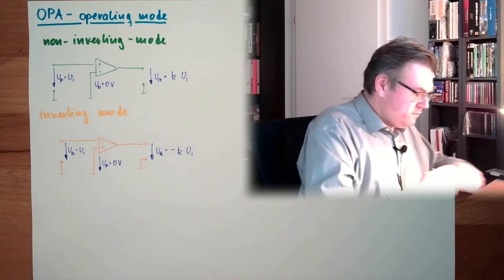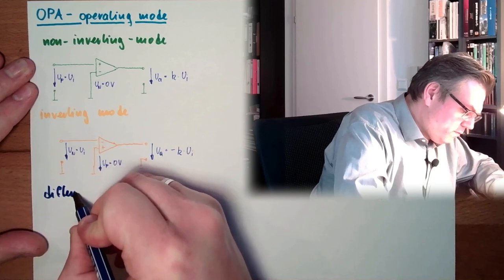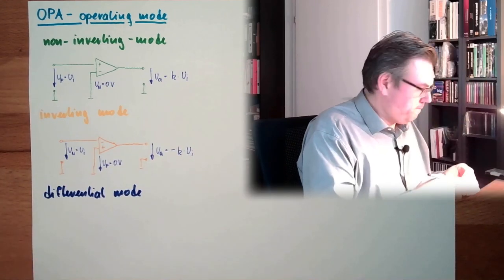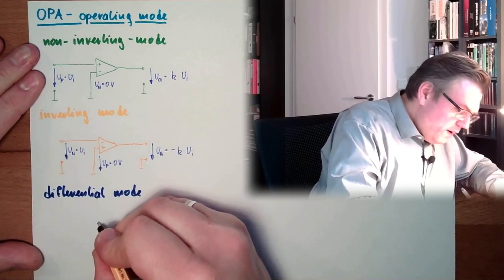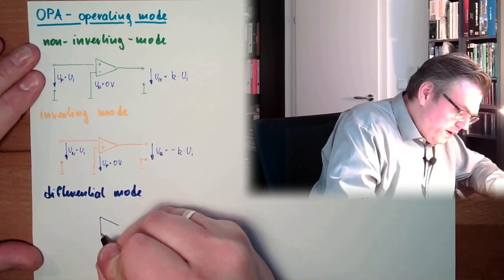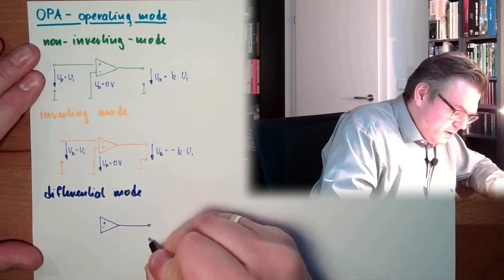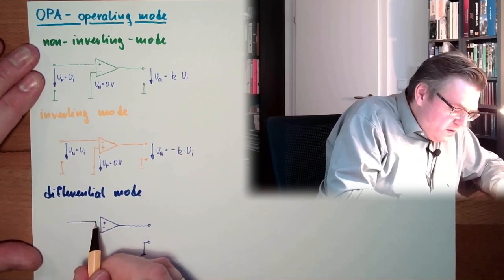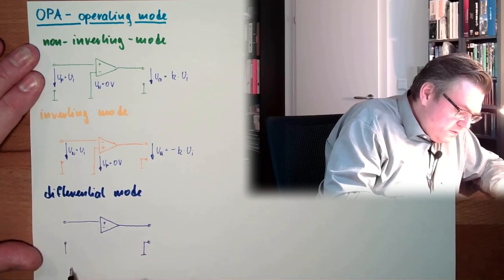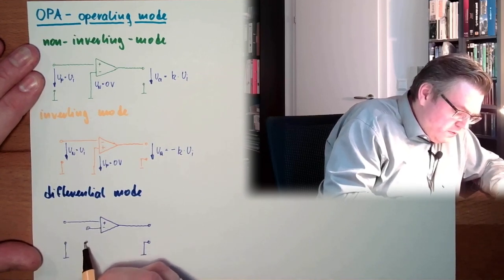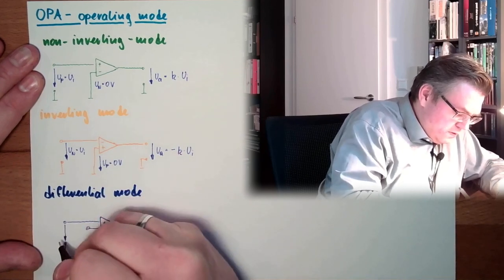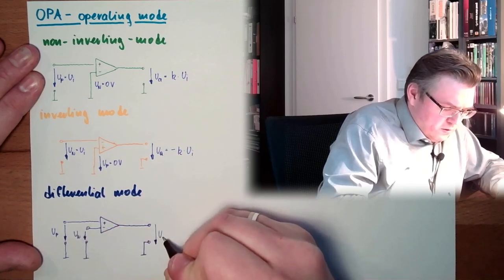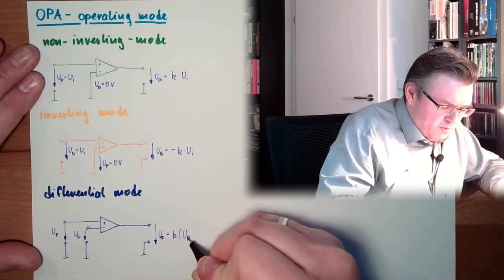Here I do have again my operational amplifier. Plus and minus. I have here my output. And now I have two inputs. I have here a positive and here a negative voltage. Here is the UP. Here is the UN. And here is UA. And this is K multiplied UP minus UN.